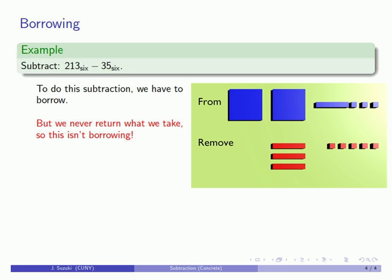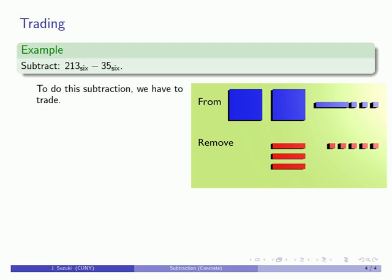So in this type of subtraction it is very very very important not to call this procedure borrowing. You never return what is taken. It is trading. Alternatively you can think about it as unbundling because remember every unit is formed from some number of smaller units.